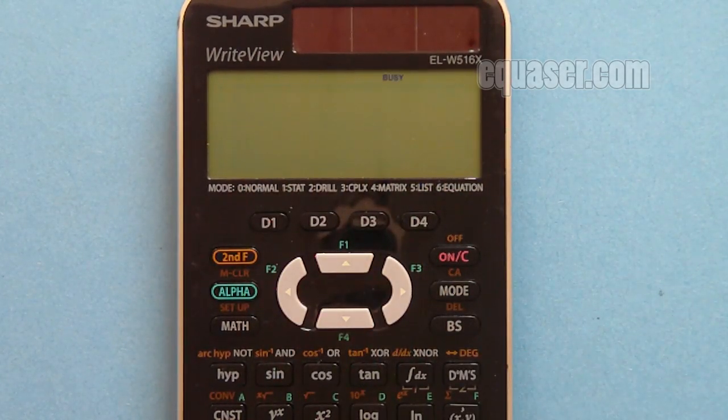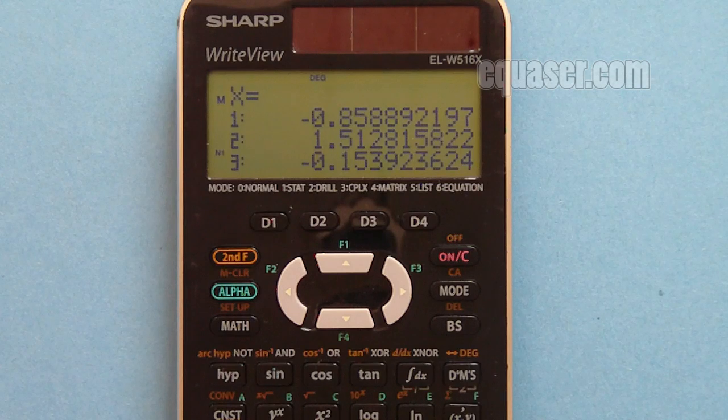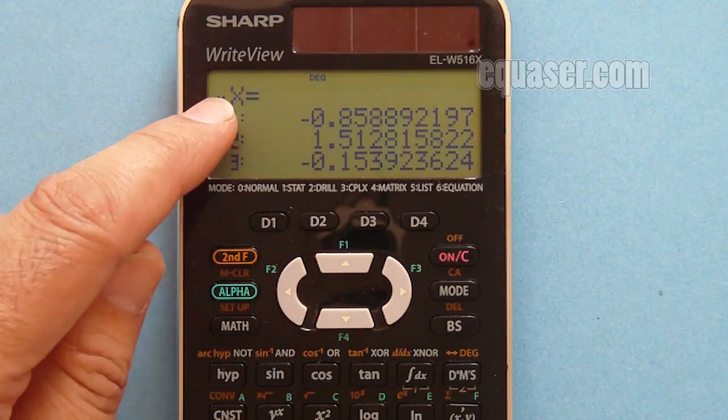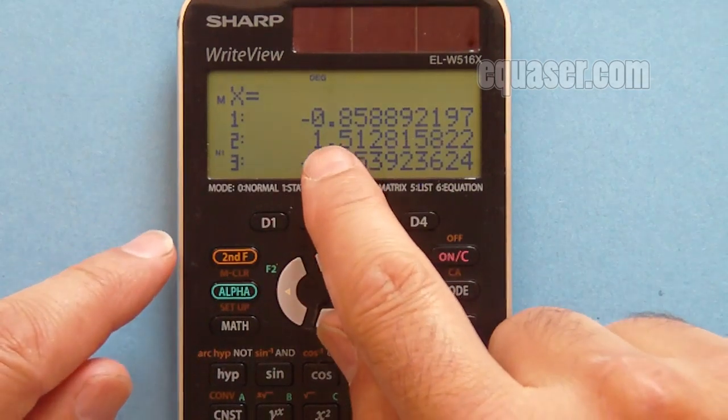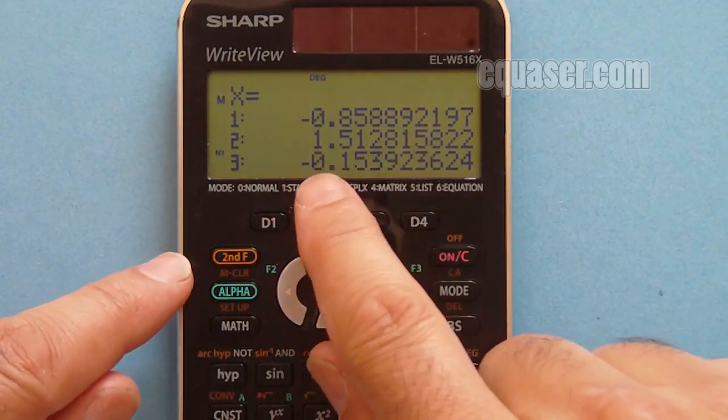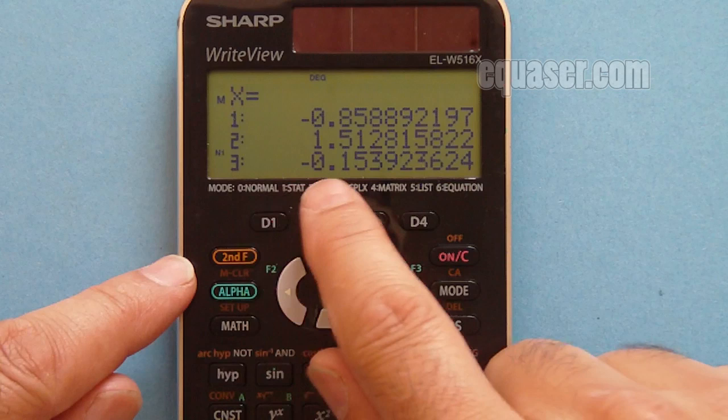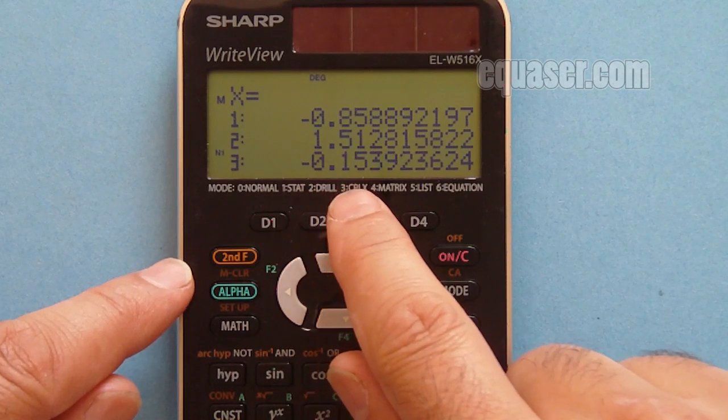Now at the end, if I press equal sign, we get three values for X. The first value is negative 0.85, the second is 1.5, and the third one is negative 0.15.